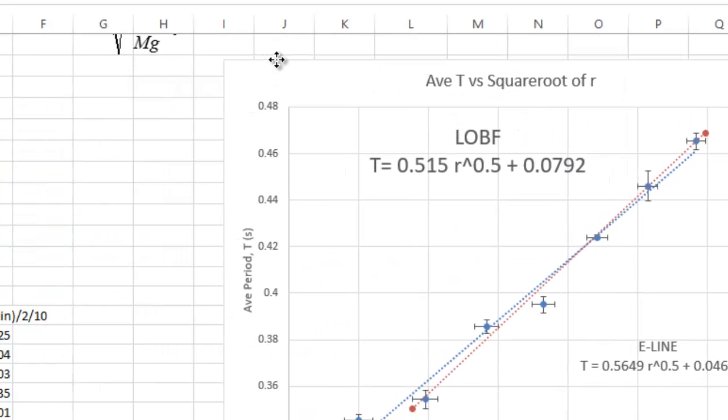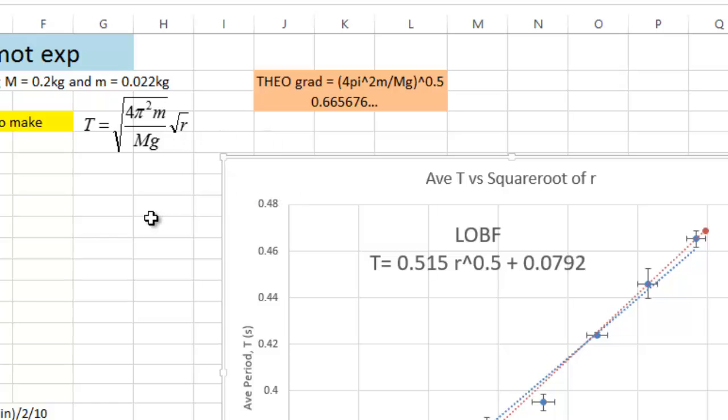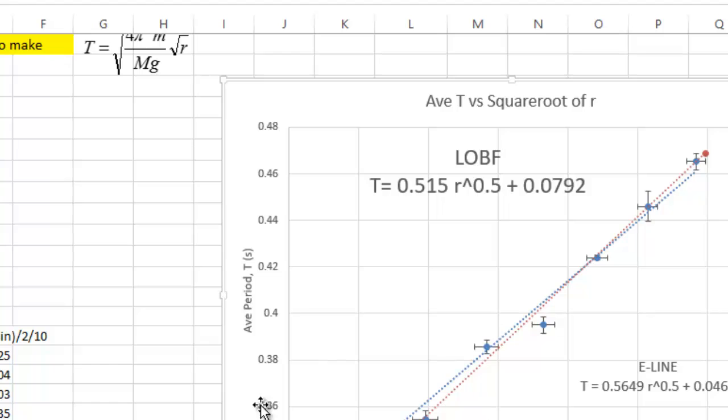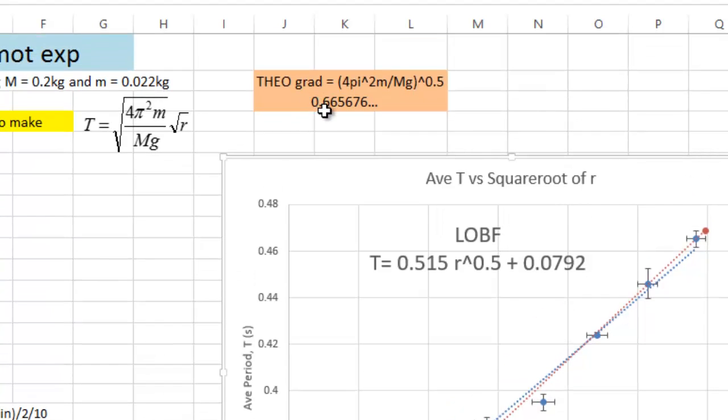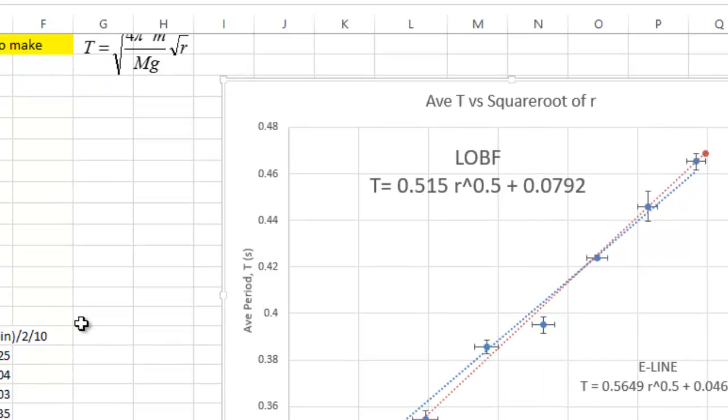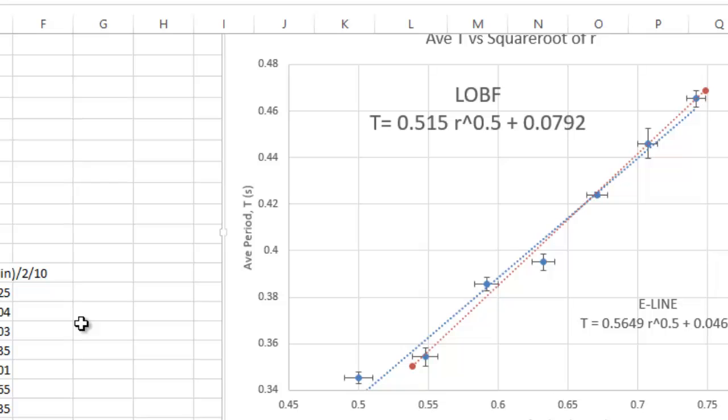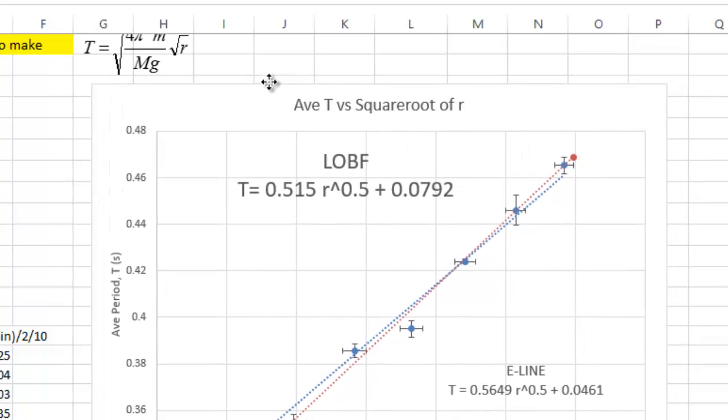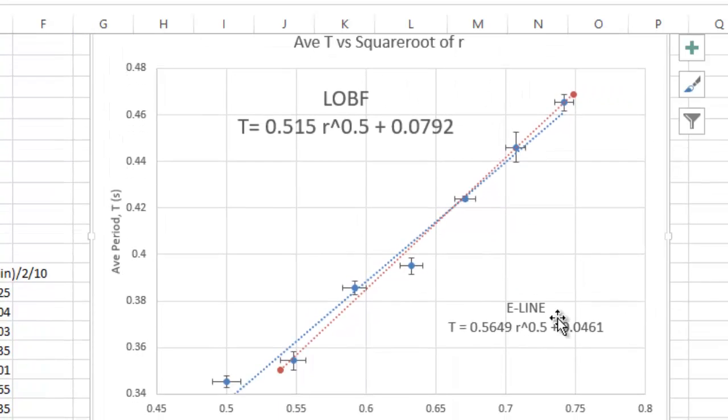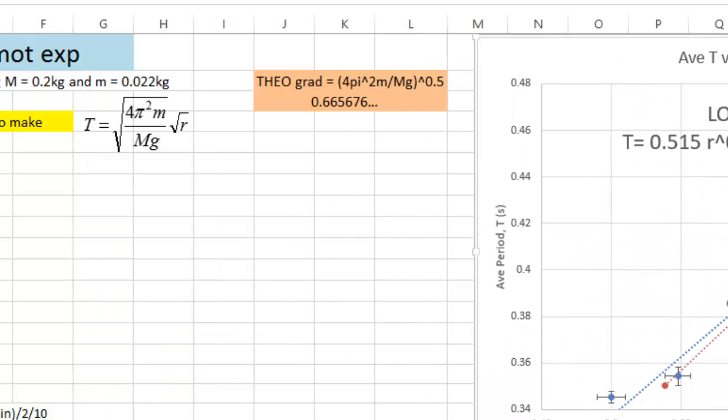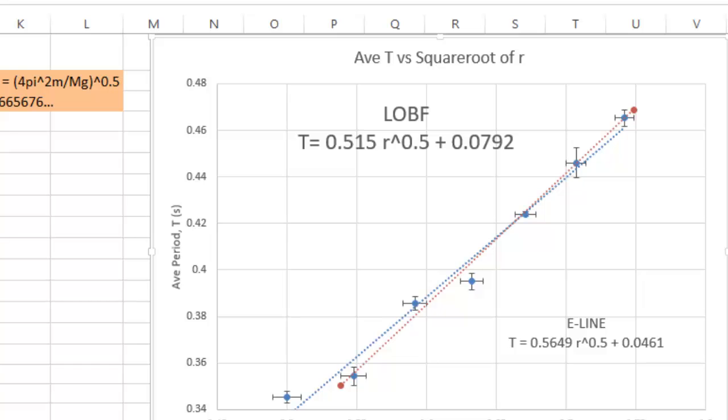Now, one thing that we probably want to do. I didn't mention this before, but I've already worked it out. Is work out where the theoretical gradient should have been. Ours is 0.515. Our error line is 0.5649. What we've got is a theoretical gradient when you plug in the controlled variables of 0.665. So, we're a bit off, but that's okay. If you remember this experiment, that's entirely expected. So, now, we're ready for a calculation of our variables. So, I'll put this over here. The calculation of our variables.